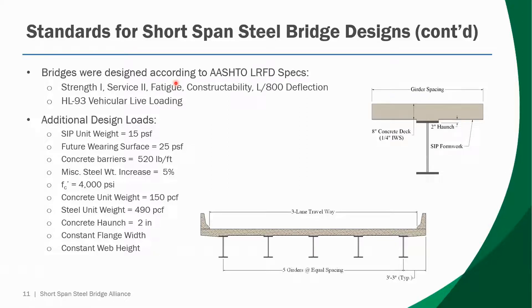This slide contains some of the nitty-gritty details for the hardcore bridge engineers on the webinar. The design assumptions and design loads we utilized were fairly typical upper-bound loads for representative short span design: two-inch haunch, 15 PSF stay-in-place form unit weight, 25 PSF future wearing surface. We designed for Strength I, Service II, and Fatigue limit states.